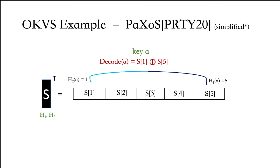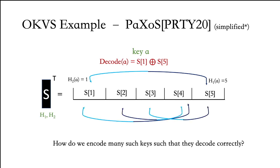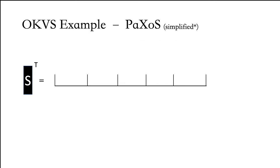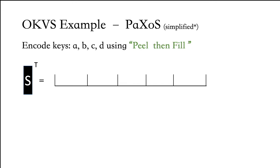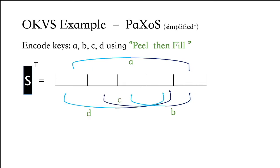Paxos needs to encode a set of keys, so how do we encode many keys while ensuring that each decodes correctly? Suppose you have to encode 4 keys A, B, C, D. We use a method called Peel then Fill. First, we compute the hashes h1 and h2 of all the keys. Next, we recursively identify slots that are constrained by just one key. Position 2 is constrained by key C and position 3 is constrained by just key B. When we have multiple options we can arbitrarily break ties, so I will pick position 2, constrained by key C, then delete the constraints associated with key C.